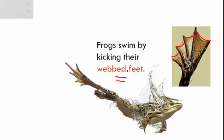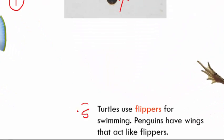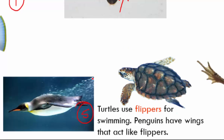Turtles use their flippers to swim. Penguins also cannot use their wings for flying because their wings act like flippers — the shape of this limb is modified to help in cutting and wading through water. That is why penguins can swim very well but cannot fly.